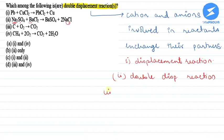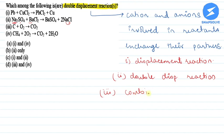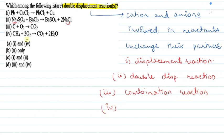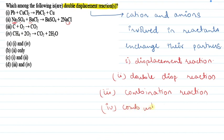Reaction number three is C + O₂ giving CO₂. It is a combination reaction in which more than one reactant species is combining to give a single product. Reaction number four is the combustion of methane — CH₄ burning in the presence of O₂ to give CO₂ and H₂O. This is a combustion reaction.